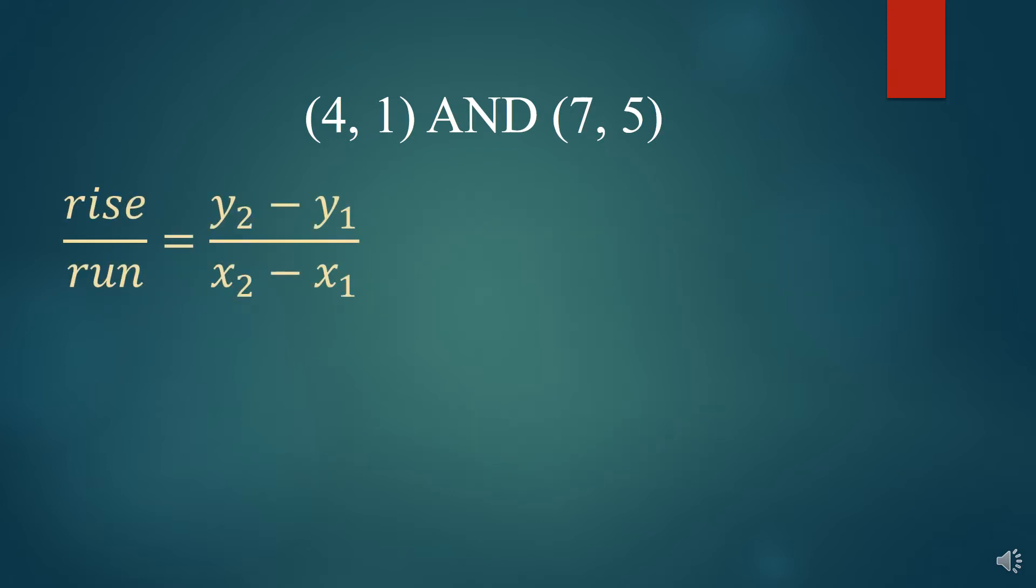Now, this, my friends, is the slope formula: y2 minus y1 over x2 minus x1. Now, I know you're thinking to yourself that that is a pretty complicated thing that you're looking at right there. But I'm here to tell you that it's not so bad.